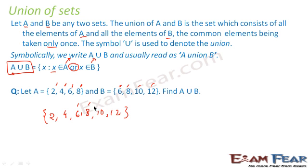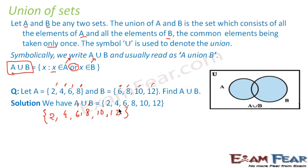So A union B = {2, 4, 6, 8, 10, 12}, because it includes all elements which are part of A or part of B. Now we'll represent the same thing using a Venn diagram. Set A = {2, 4, 6, 8} and set B = {6, 8, 10, 12}; we see the common elements are 6 and 8.